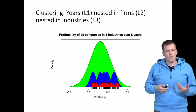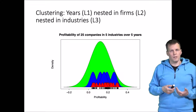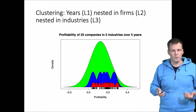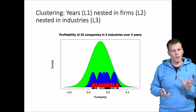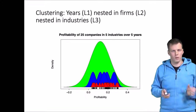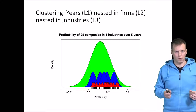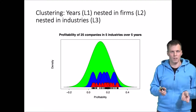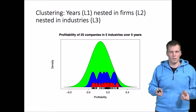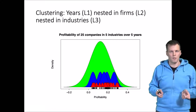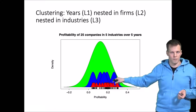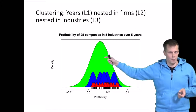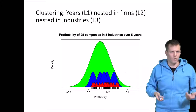To understand our data and the phenomenon it represents, we typically need to decompose the variance — to come up with percentages or other statistics that quantify how much of the variation exists at each level.